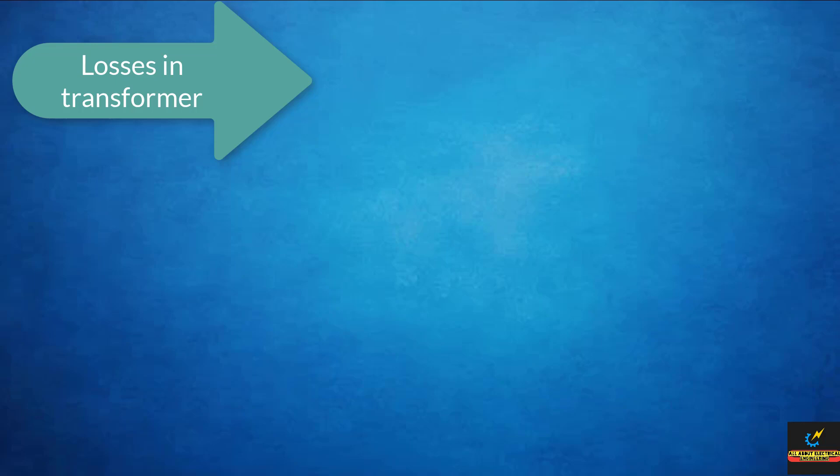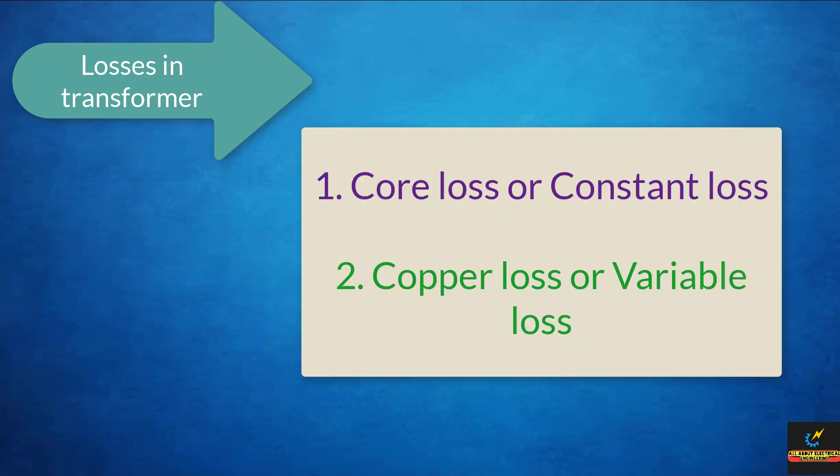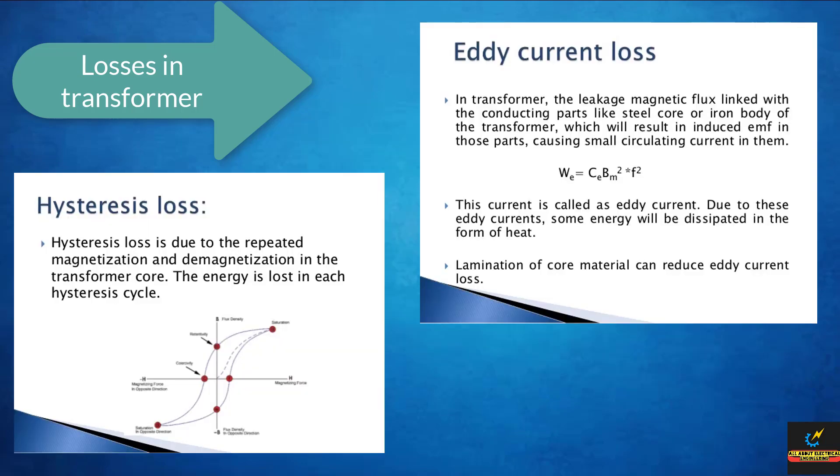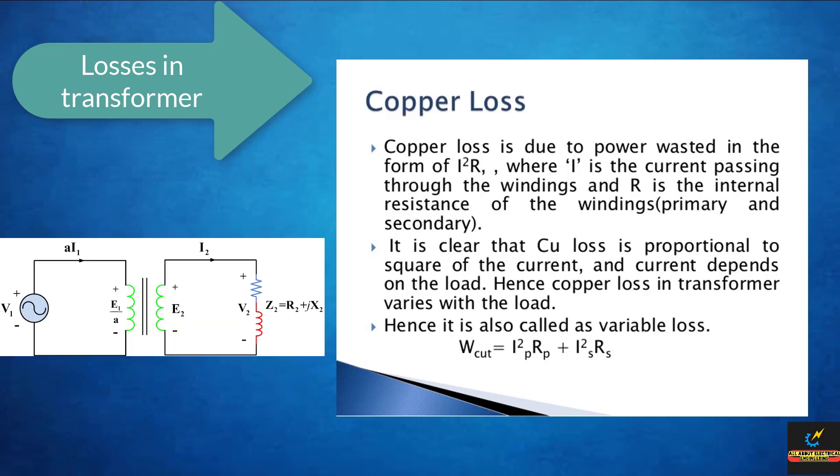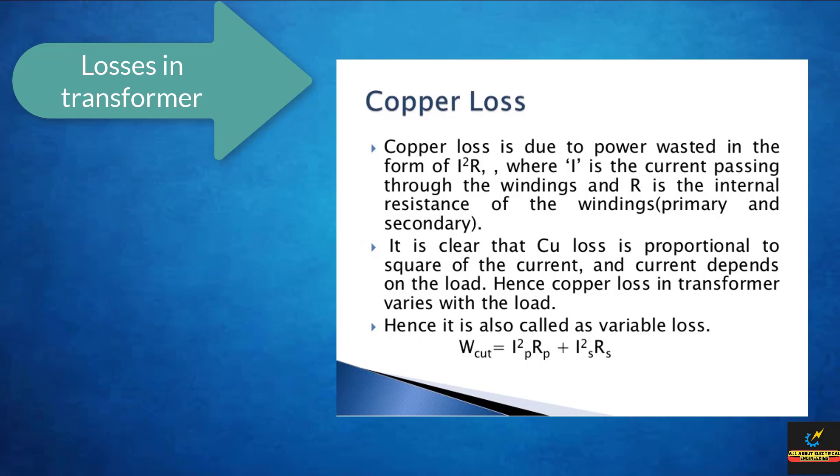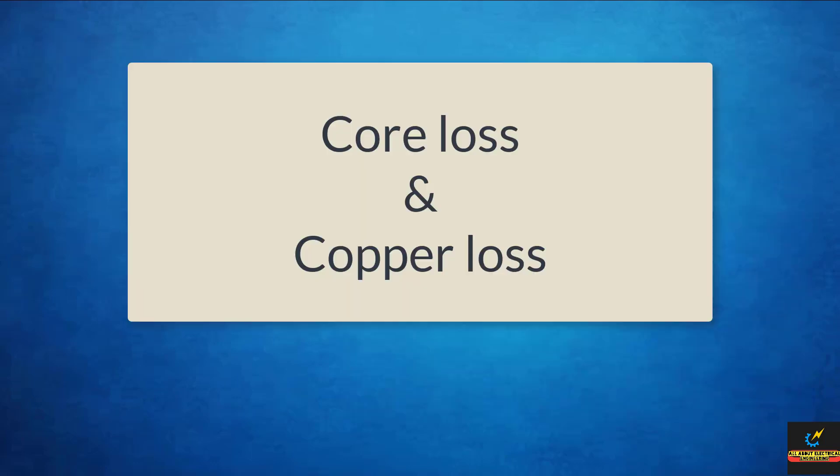Now, we are talking about the losses that occur in the transformer. First, core loss. Second, variable loss. Core loss is also called constant loss, and copper loss is also called variable loss. The core loss happens due to eddy current and hysteresis loss. And the copper loss happens because of the resistance of the primary and secondary winding. It is the loss that occurs due to the resistance in the winding. The windings are made up of copper, so it is called copper loss. We will study in details about core loss and copper loss in the next video, so stay tuned for that.